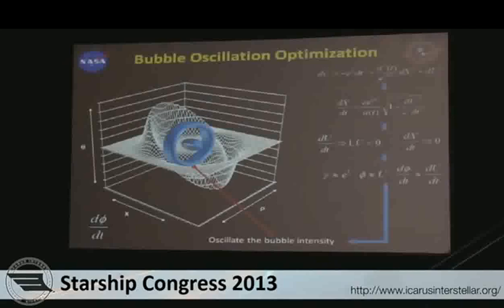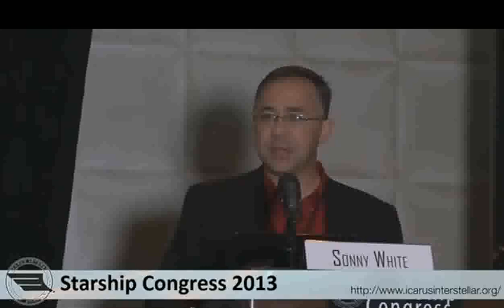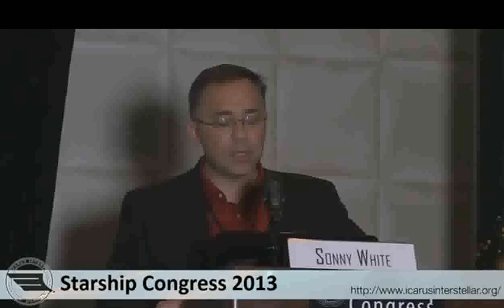The second optimization technique has some pertinence later in the talk. By expanding the Alcubierre metric into higher dimensional space-time, we considered the null-like geodesics and found additional ways to reduce the energy required for a space warp. We found that if you oscillate the bubble intensity — d-phi/dt — you reduce the stiffness of space-time.